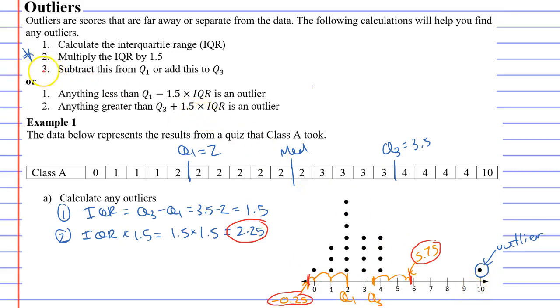By the way that's what we just did in step 3. We subtracted this number from Q1. We went to the left and we added this number to Q3. So from this we'll write a little conclusion. Therefore, 10 is an outlier.